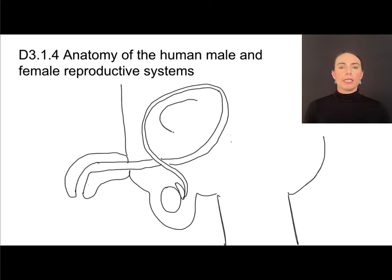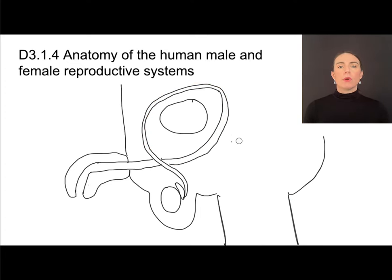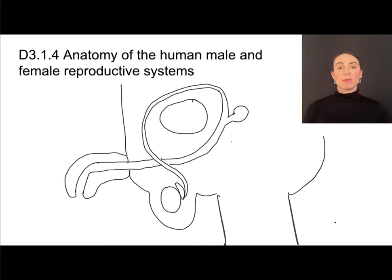As the sperm is traveling through the sperm duct, it passes alongside the urinary bladder and receives fluid from glands. There's a small duct leading to a gland right here called the seminal vesicle. The sperm duct is also going to join in with a tube coming from the urinary bladder at a junction point.